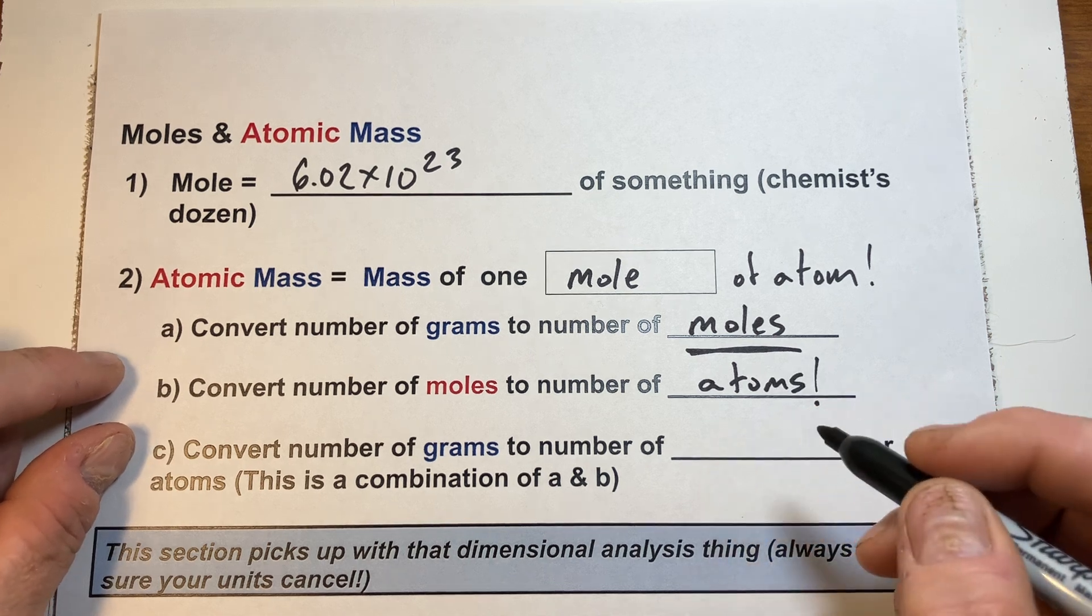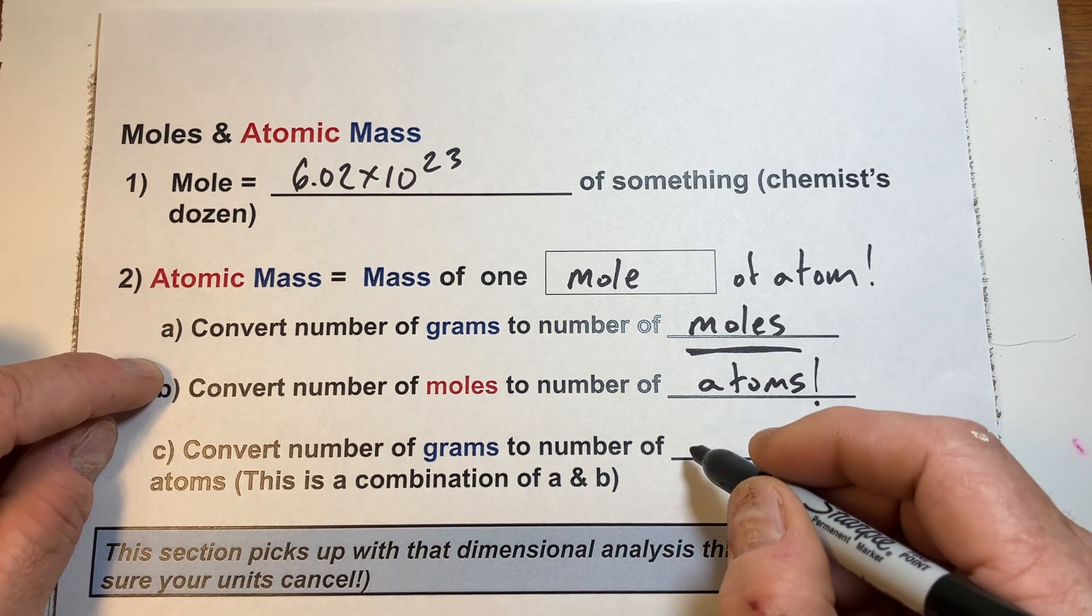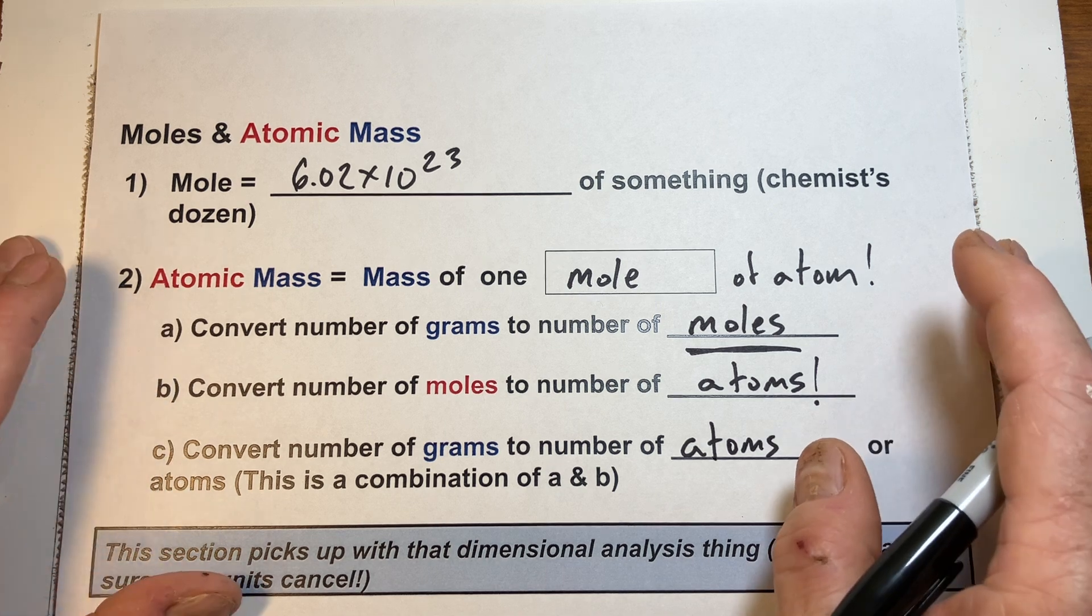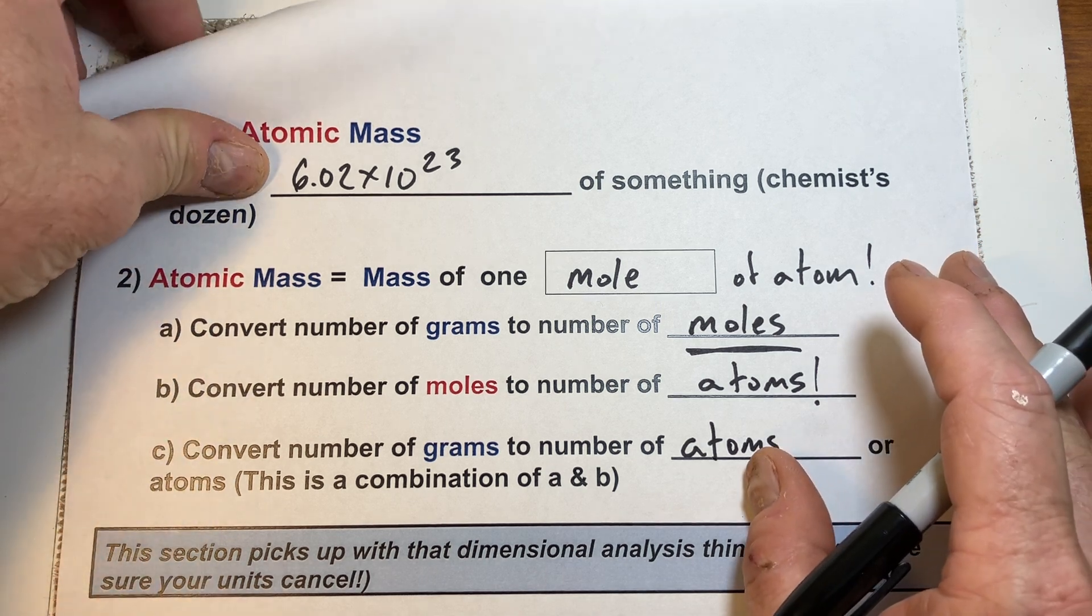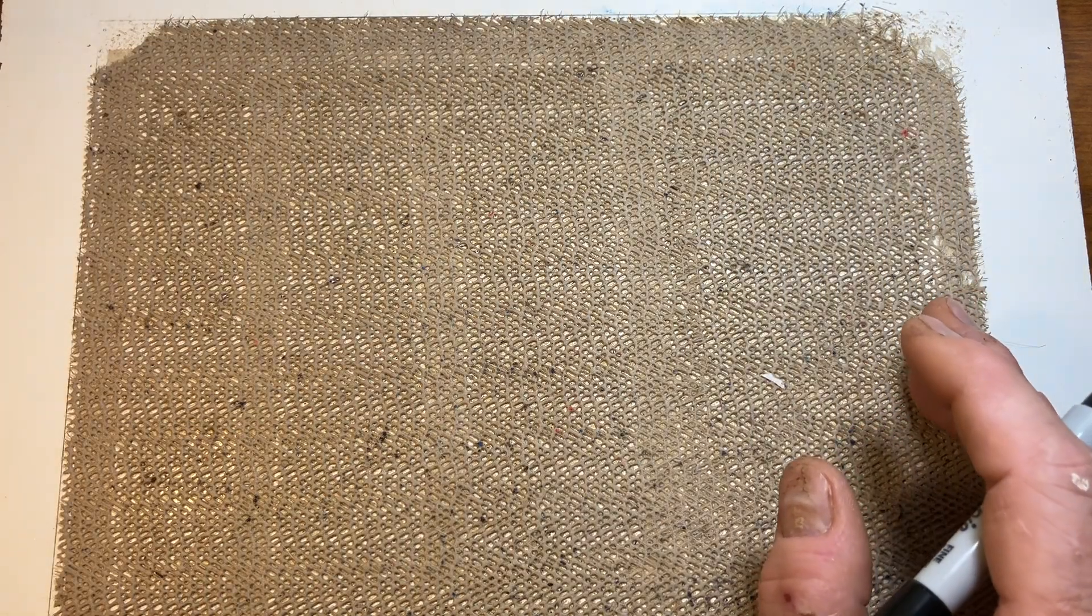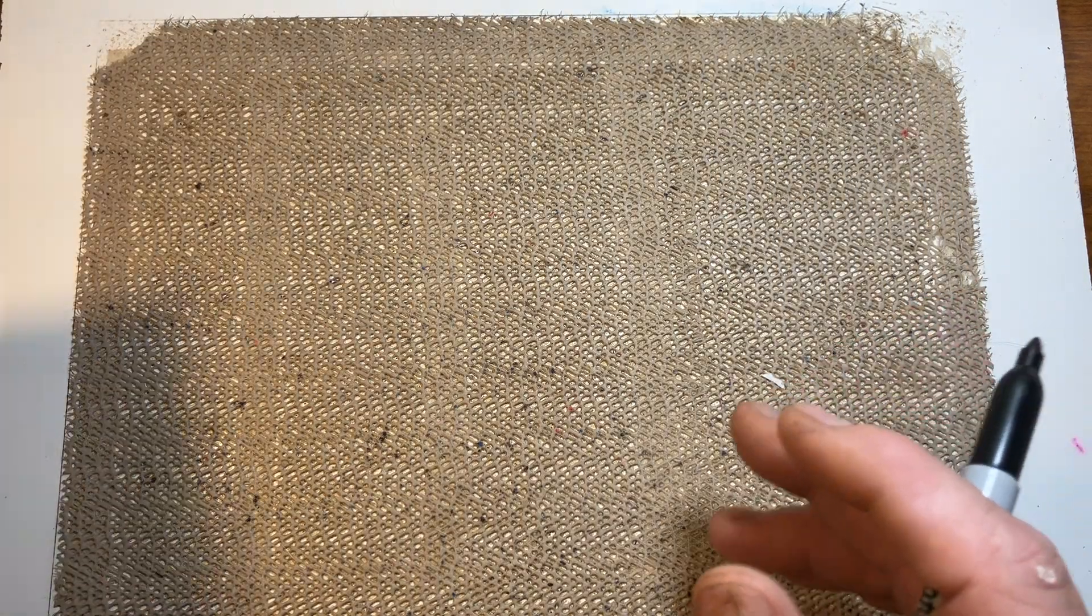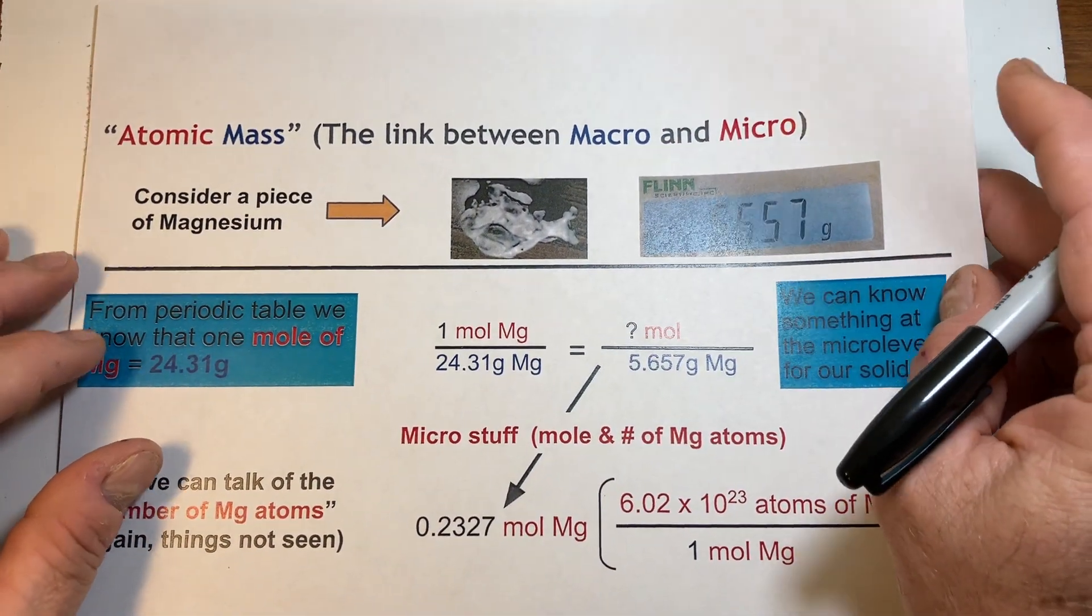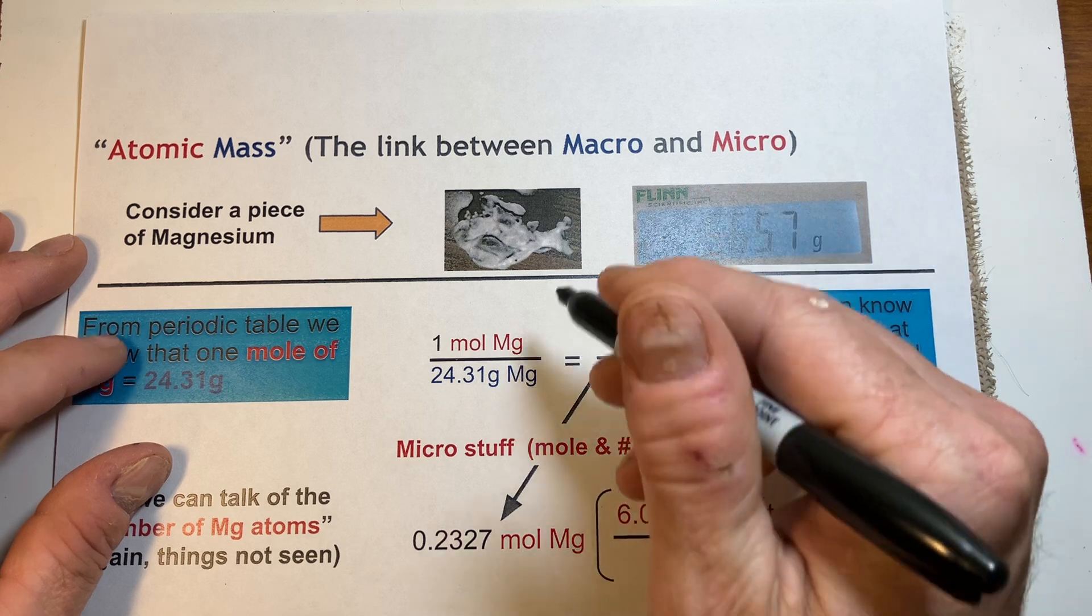And we can do all of these together, A and B, to convert number of grams to number of atoms. We can do that through this concept or this particular conversion, the mole. It's a dimensional analysis that we're doing. So, you've seen that before. That's good.